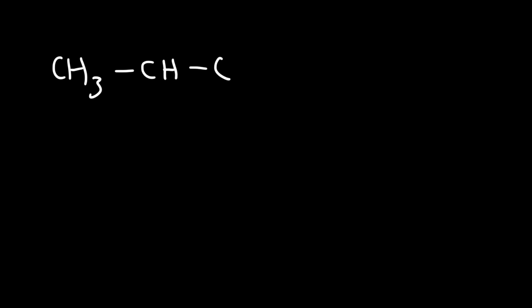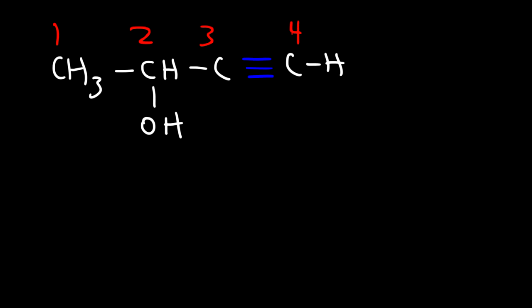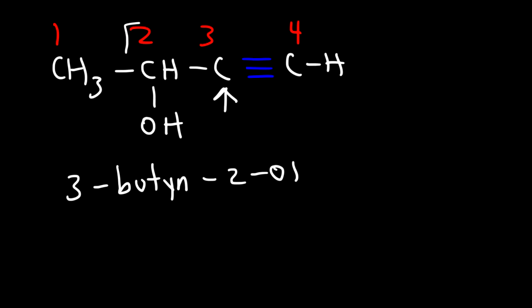What if we have an alkyne with an alcohol functional group? Which one has more priority — the alcohol or the alkyne? It turns out the alcohol has a higher priority than the alkyne, so we give the OH group the lower number. This is called 3-butyn-2-ol: the alkyne is on carbon 3 and the alcohol is on carbon 2.